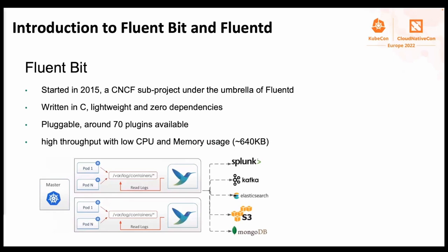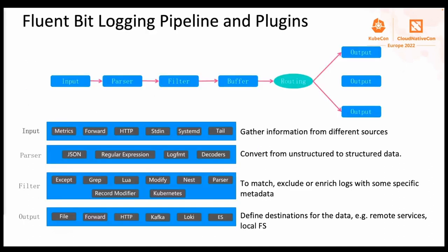FluentBit also has monitoring and stream processing capabilities. So far, FluentBit has reached 1 billion downloads and has been adopted by thousands of organizations such as AWS, DigitalOcean, Microsoft, KubeSphere, and so on. As you can see from this graph, this is a data pipeline that represents a flow of data that goes through the inputs, filters, and outputs.